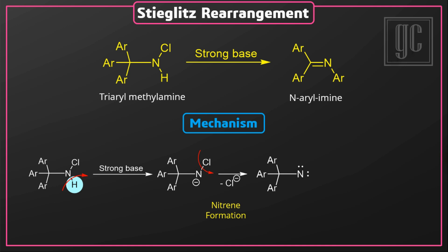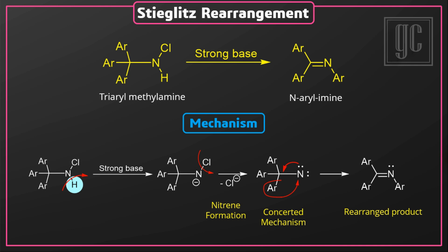Nitrenes are very reactive in nature. Because of that, under the concerted mechanism, carbon-to-nitrogen one aryl group migration takes place, and a rearranged product — an arylamine — is formed. The stereochemistry of the migrating group remains unchanged.